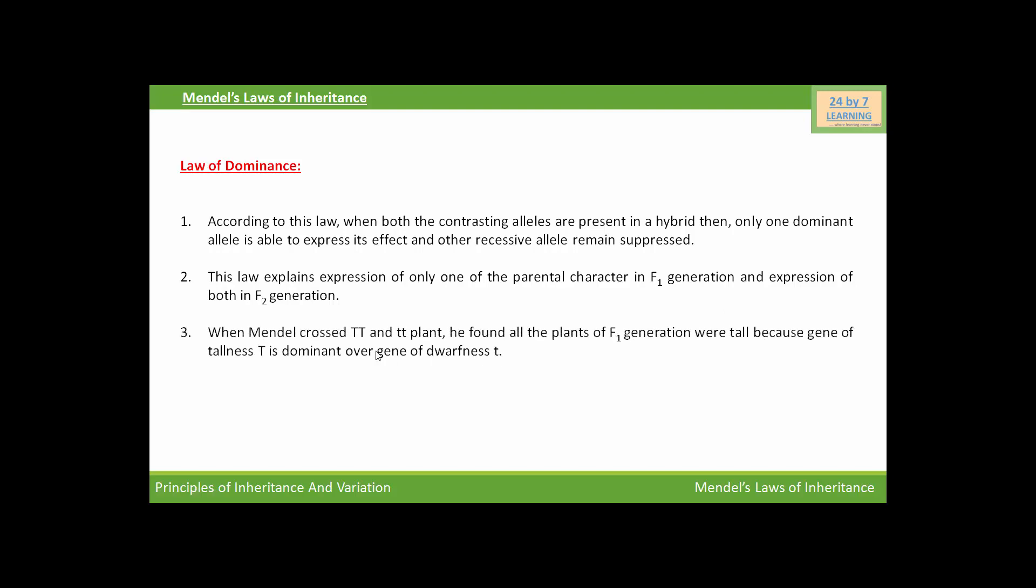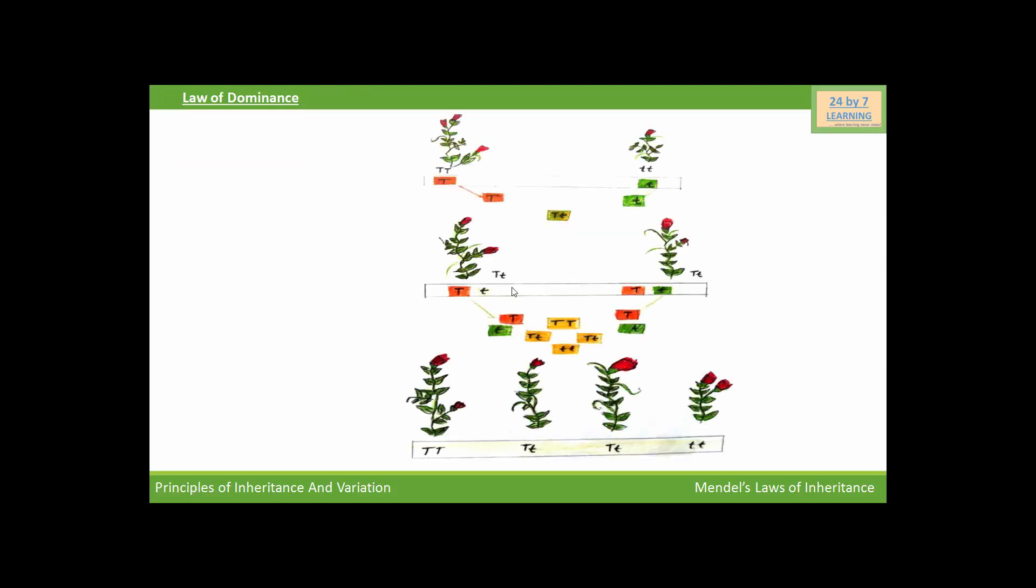When Mendel crossed capital TT and small tt plants, that is pure tall and pure dwarf plants, he found that all plants of F1 generation were tall, because gene of tallness capital T is dominant over gene of dwarfness small t. Here we can see in this monohybrid cross...